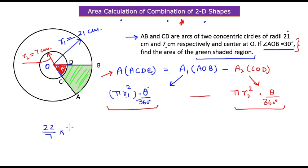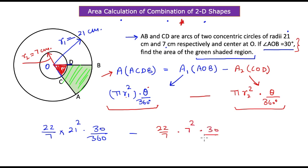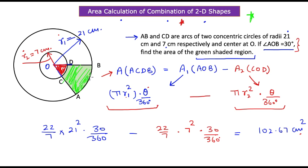Plugging in all values: A1 = (22/7) × 21² × (30/360), minus A2 = (22/7) × 7² × (30/360). The final value comes out to be 102.67 centimeters squared.